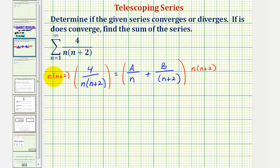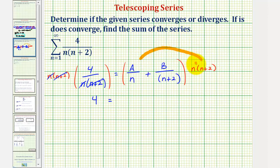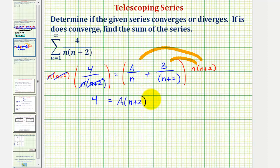Notice on the left, we have n over n that simplifies to one, as well as n plus two over n plus two. So we have four equals. Now on the right, for this first product, notice how the factor of n simplifies out, which would give us A times the quantity n plus two. And for the second product, notice the factor of n plus two simplifies out, so we have plus B times n.